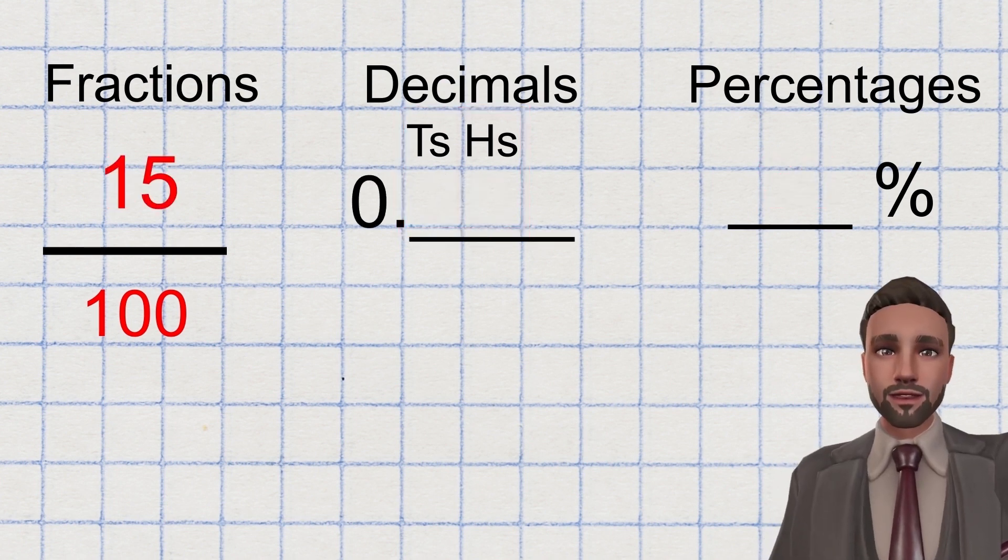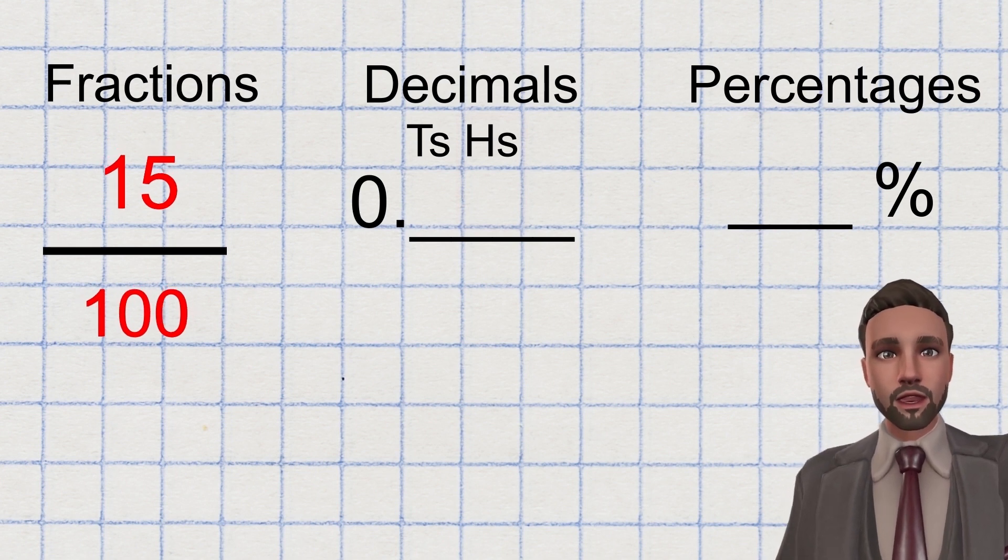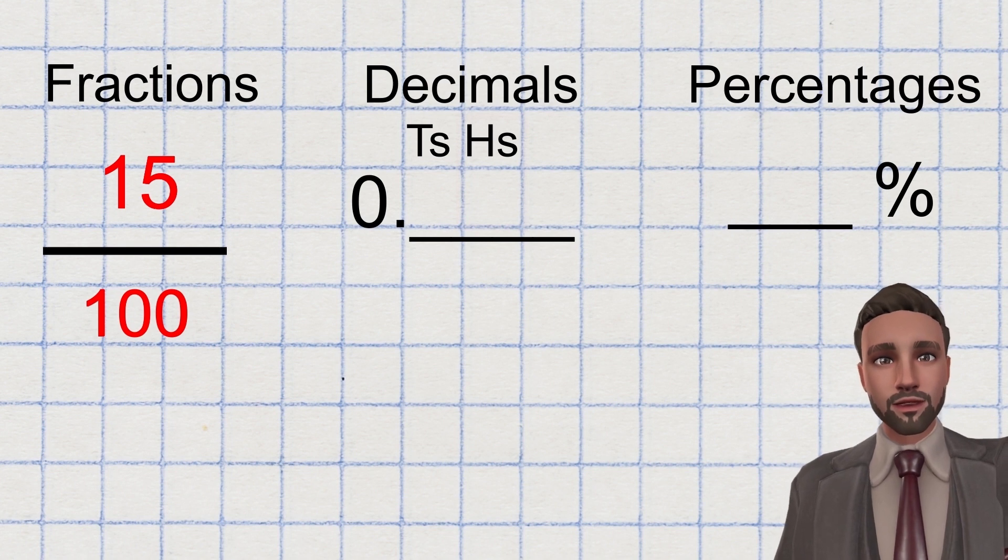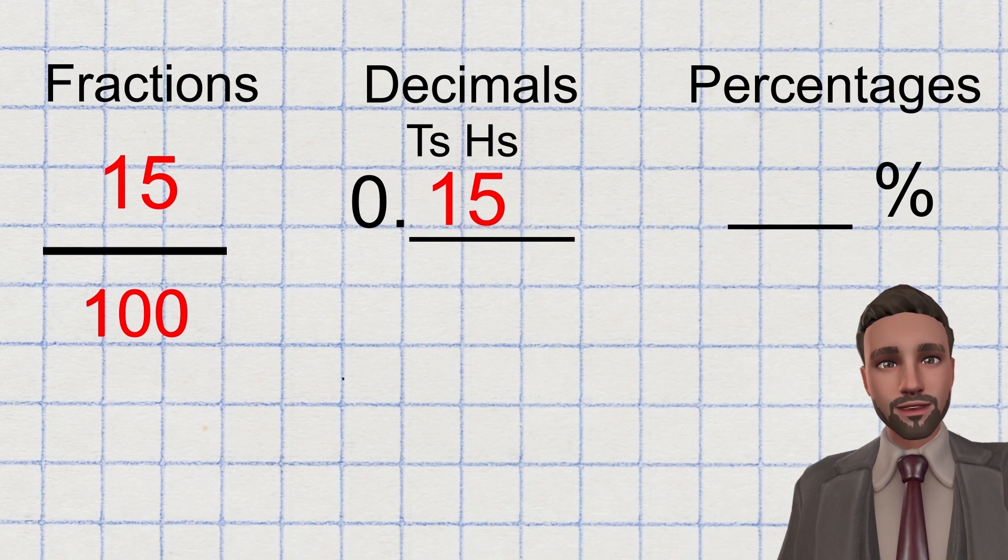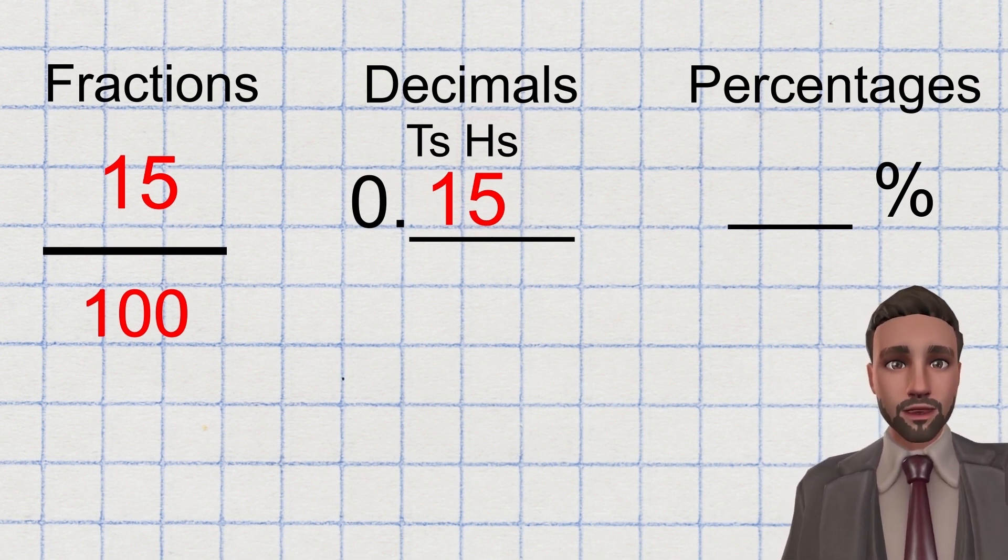Let's take a look at when we are given a fraction at the beginning. Here is 15 out of 100. Hopefully you have seen how simple it becomes when our parts are split into 100. So as a decimal, 15 out of 100, you simply put the numerator, the parts that we have, in the first two digits after the decimal place. So it reads 0.15.